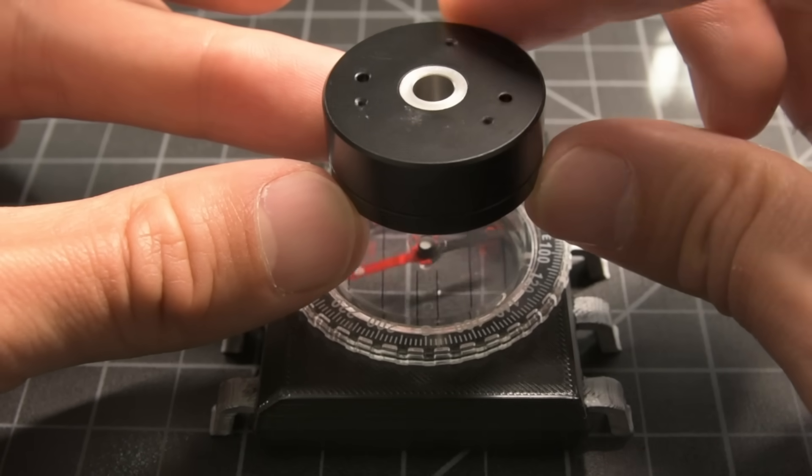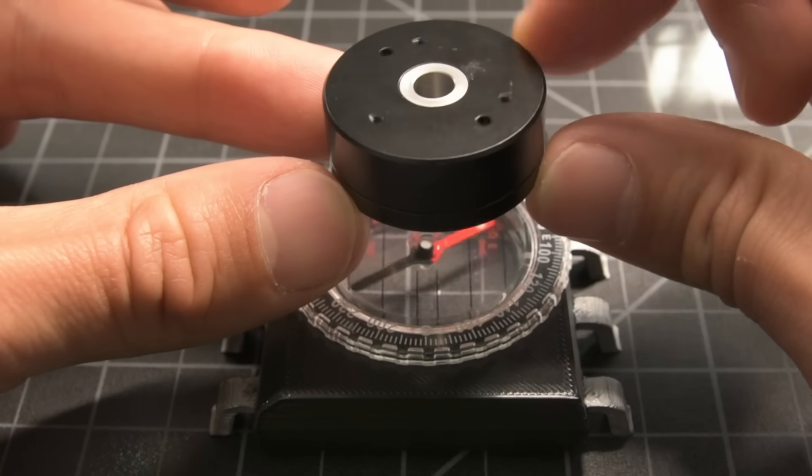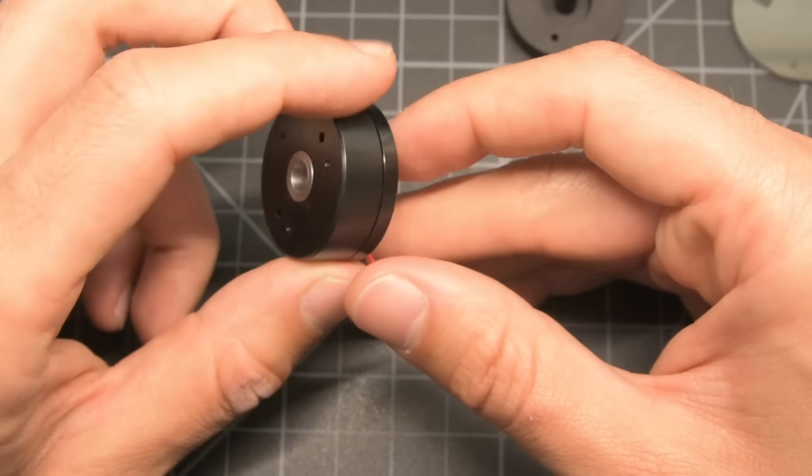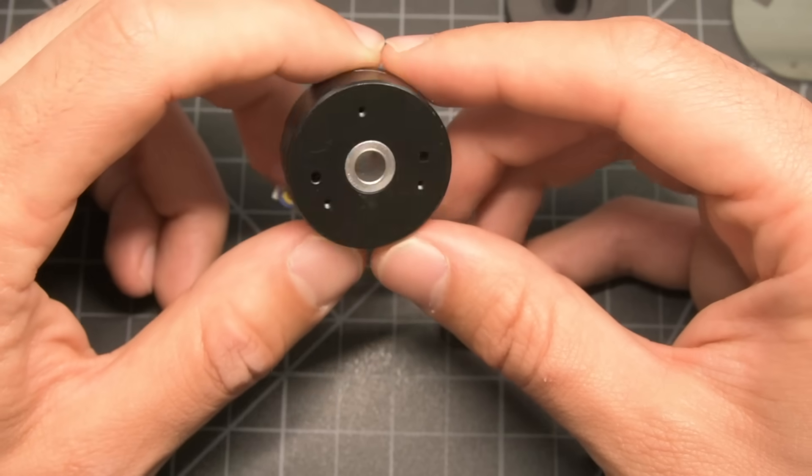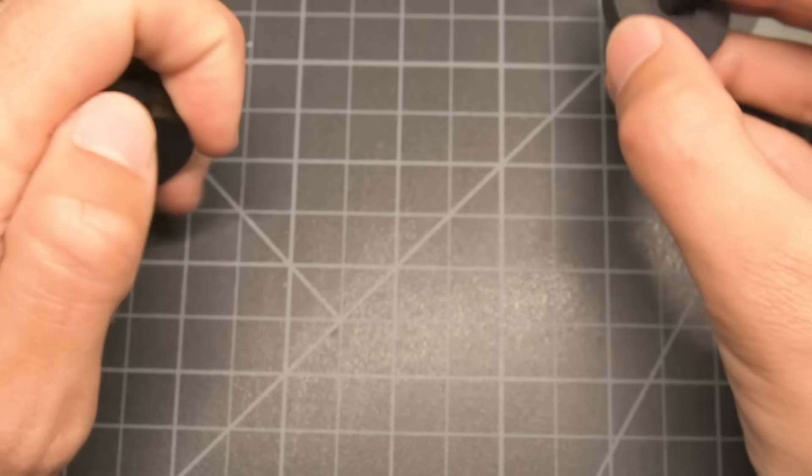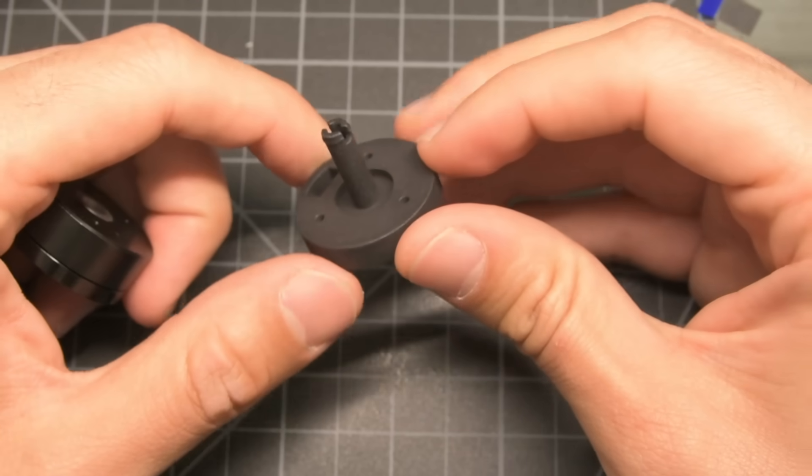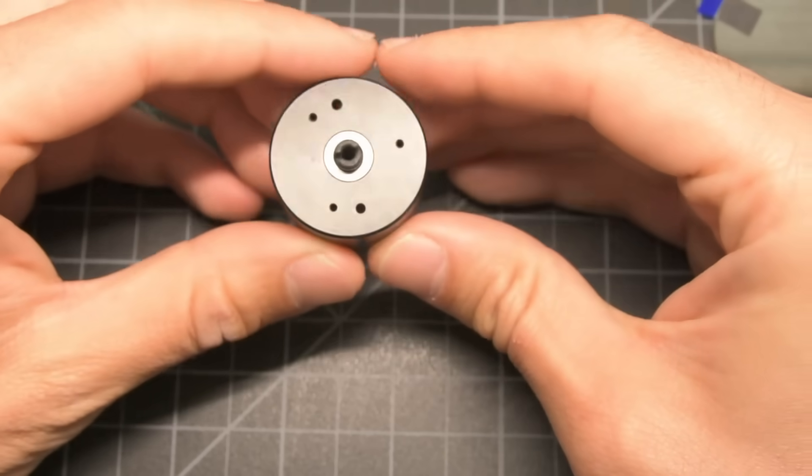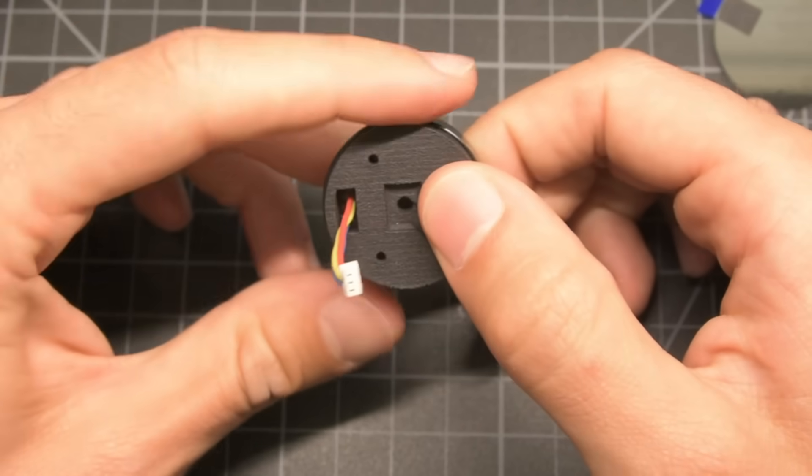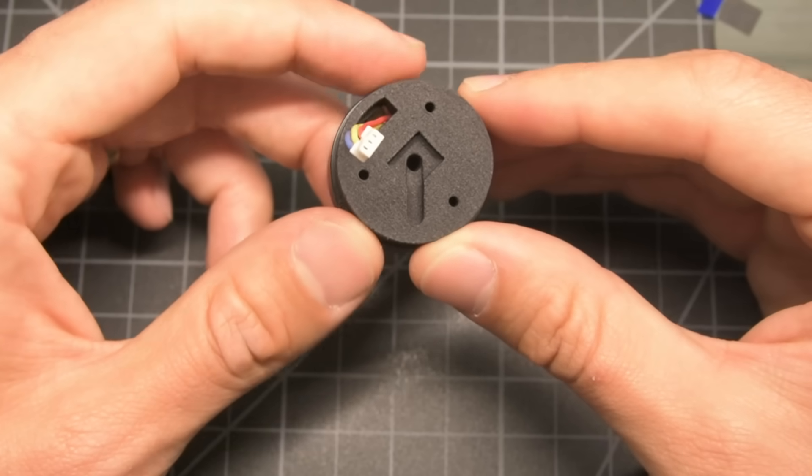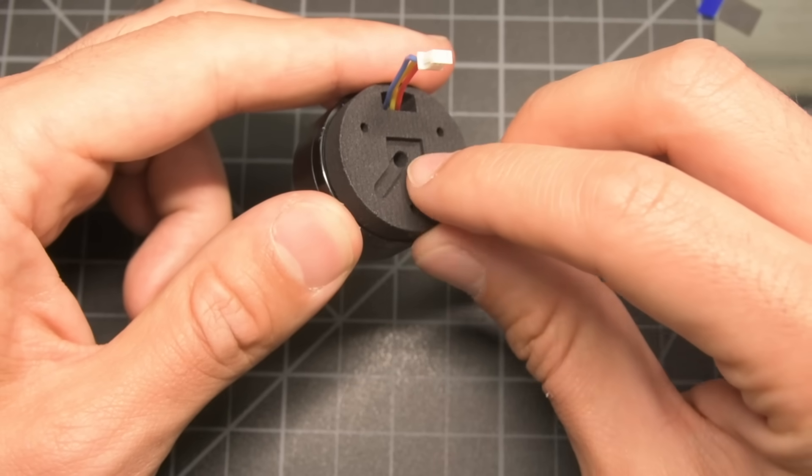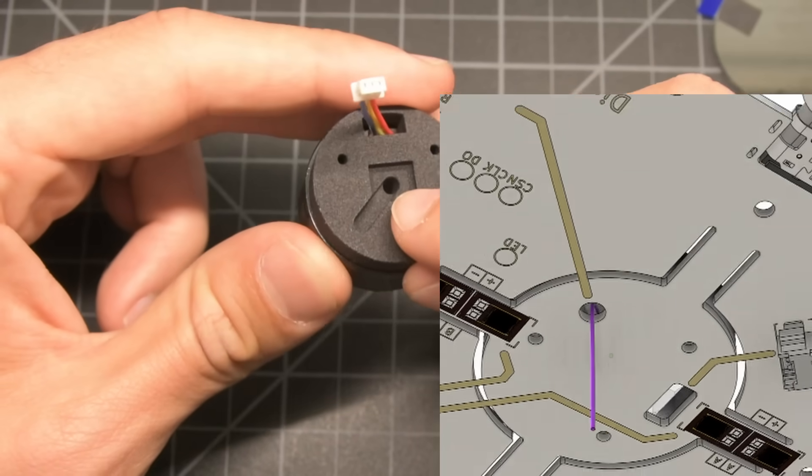This brings about a mechanical challenge. The magnetic encoder chip needs to be centered directly below the motor, but we also need to support the LCD and run wires to it through the center of the motor. The solution is this 3D printed piece. It's got a hollow shaft that mechanically supports the LCD above the motor. On the bottom, there's a rectangular cutout for the magnetic encoder, and a slot so that the LCD's wires can be routed to the side of the magnetic encoder and through an offset hole on the PCB.